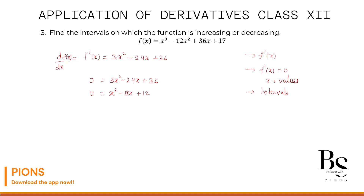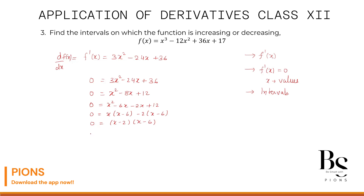Now we have x² - 8x + 12 = 0. Using middle term splitting: x² - 6x - 2x + 12 = 0, because -6 + (-2) = -8 and (-6)×(-2) = +12. Taking x common: x(x - 6), and taking -2 common: -2(x - 6). So this factors as (x - 2)(x - 6) = 0, giving us x = 2 and x = 6.